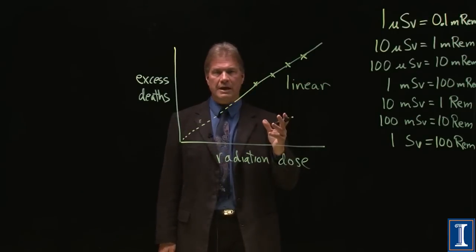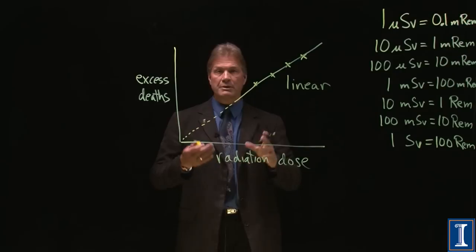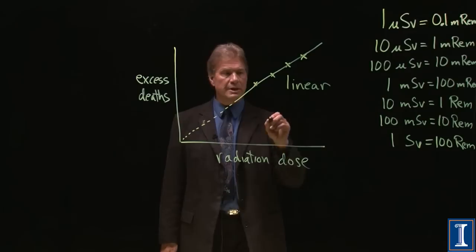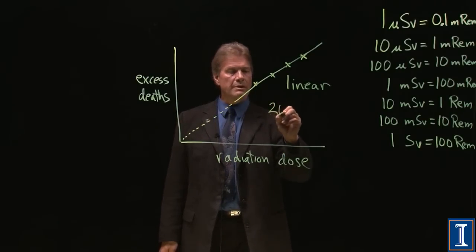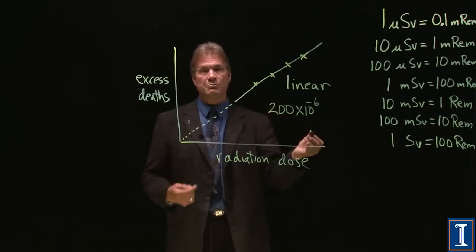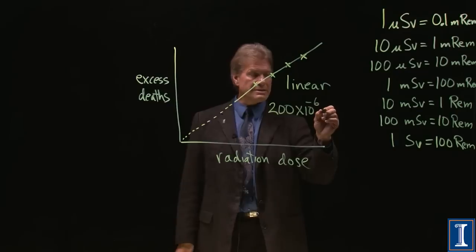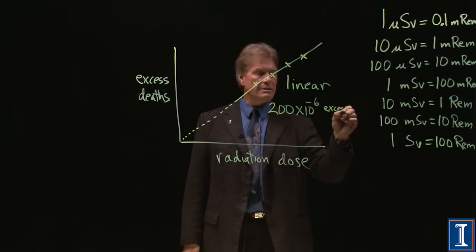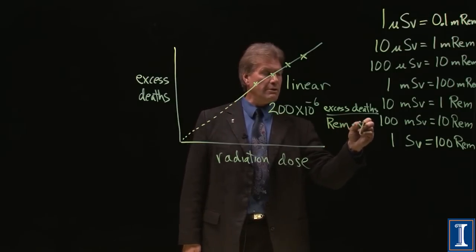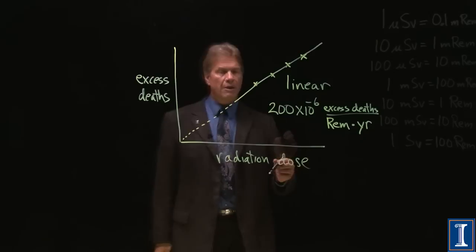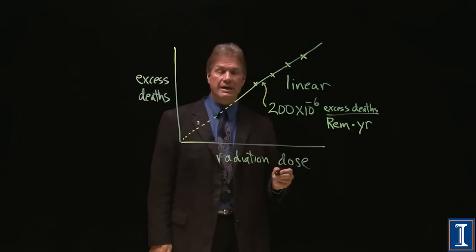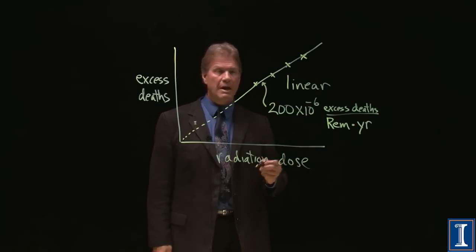And it says that any amount of excess dose is going to give you cancers at an excess number. And if I take the slope of this line, the convenient unit of that slope is 200 times 10 to the minus 6, that's 200 per million, excess deaths, excess deaths per rem of radiation per year. So the slope of this line is this 200 times 10 to the minus 6, excess deaths per rem per year. What does that mean?